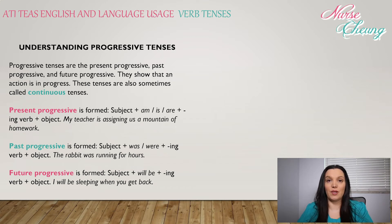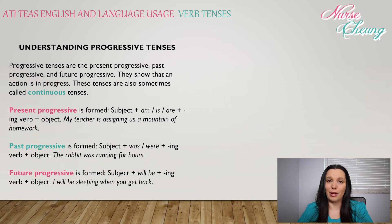Future progressive is formed: subject + will be + an -ing ending verb + object. For example: 'I will be sleeping when you get back.'